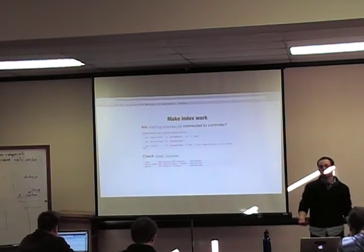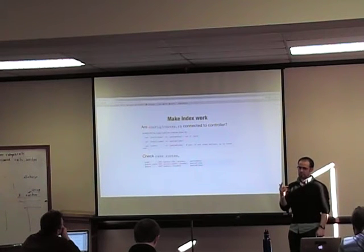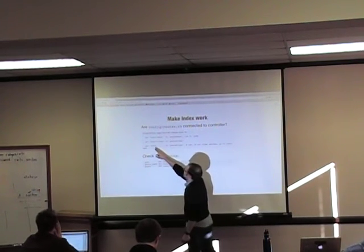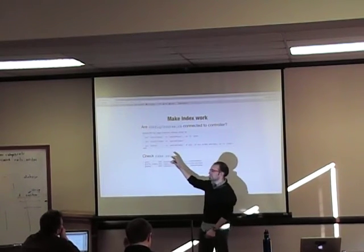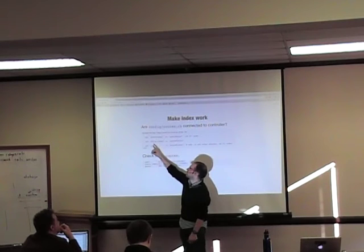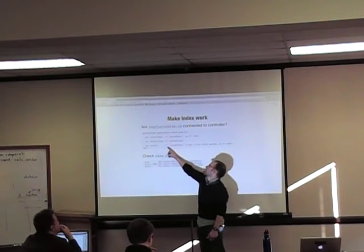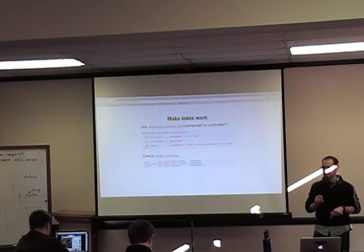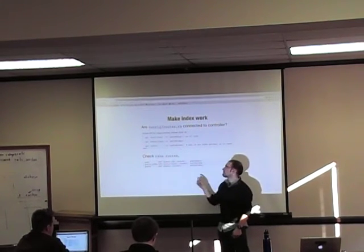We want to make the index work — we want all our blog entries to show up on the index.html page. The first thing is making sure our config/routes.rb is connected, which it is — we're pointing GET posts/index to the posts#index action. The routes.rb is a regular expression matched file, so if nothing matches above it but a URL still has the word 'post' in it, the catch-all at the bottom will be automatically sent to posts#index.